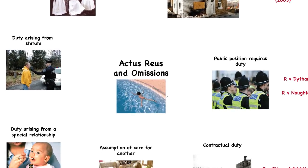Welcome to the video lecture on omissions as part of Actus Reus. The first key convention is that normally the criminal law does not require a person to act to prevent harm or wrongdoing or to prevent a crime being committed.